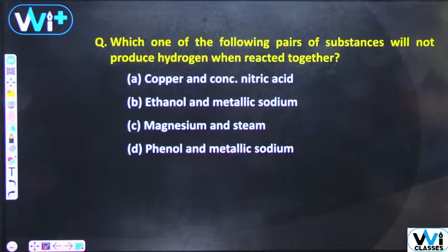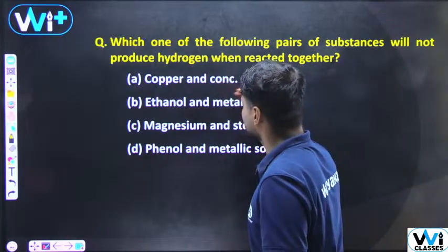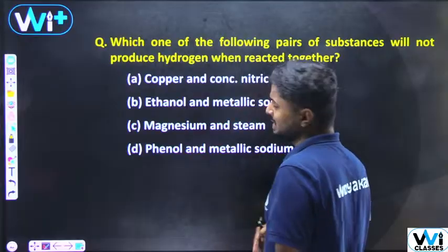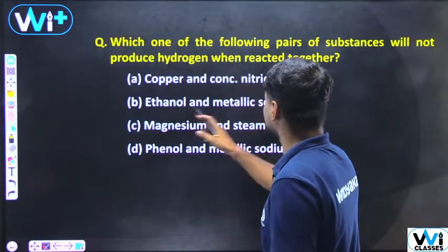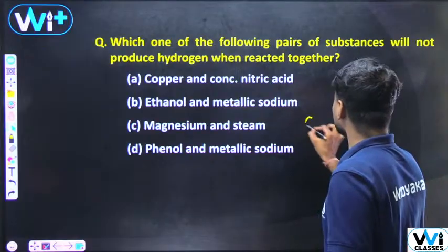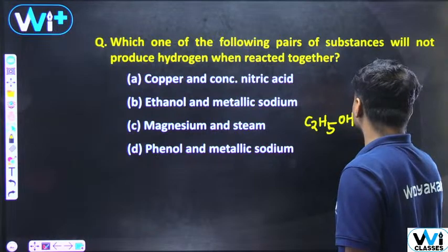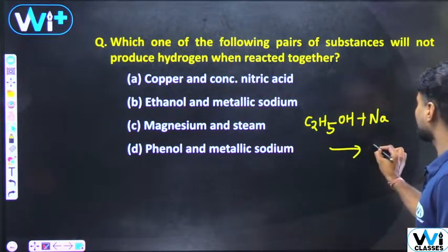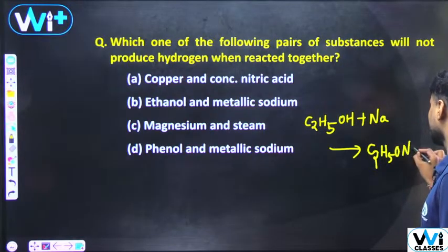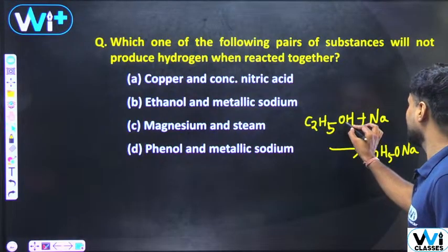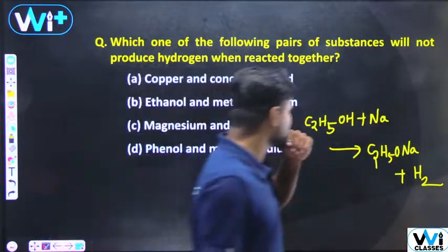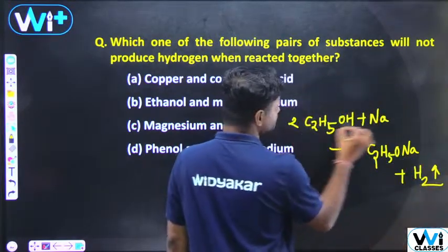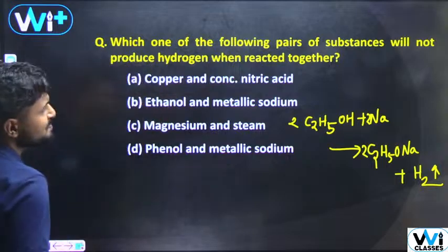Next question: Which one of the following pair of substances will not produce hydrogen when reacted together? First — ethanol and metallic sodium: ethanol C₂H₅OH reacts with sodium to produce C₂H₅ONa (sodium ethoxide), and hydrogen gas is released.